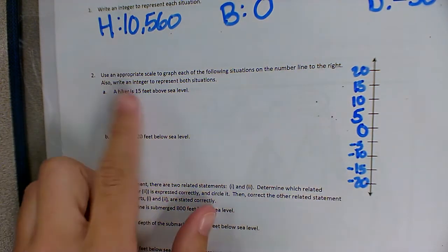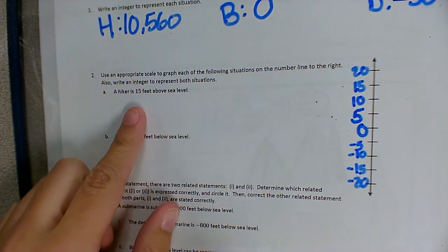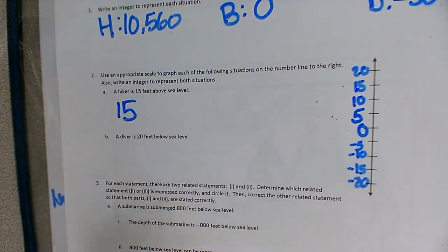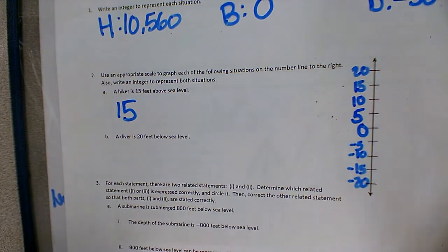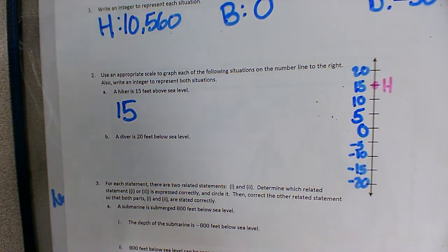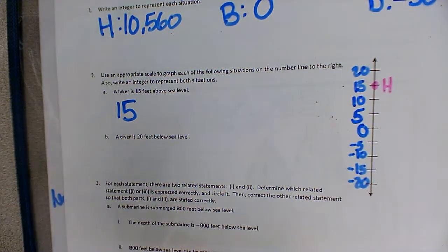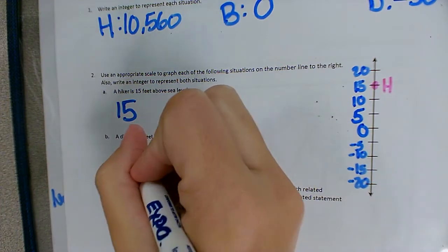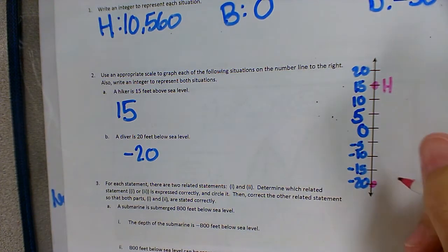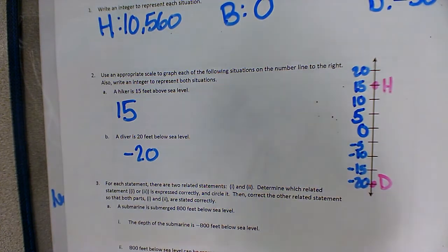So our hiker, since he's 15 feet above sea level, the integer would be 15, or positive 15. And then I'm going to show where he would be on the number line. I'm going to label him with an H, since he's the hiker. Our diver is 20 feet below sea level, so that would put him at negative 20. Again, I'm going to label that point with a D to show that that is our diver.